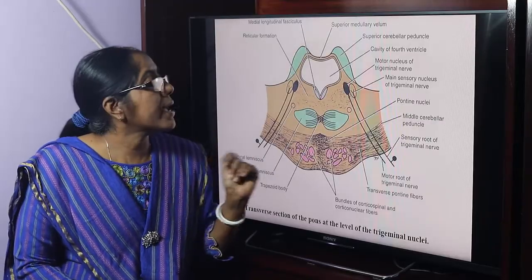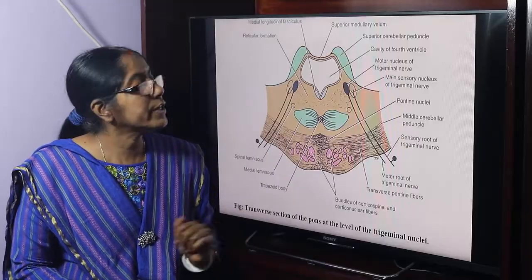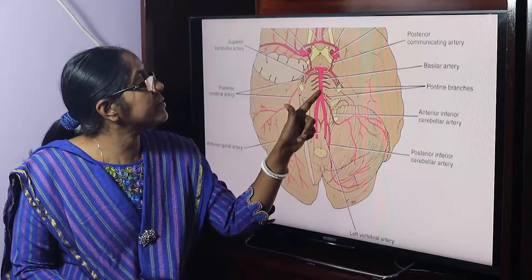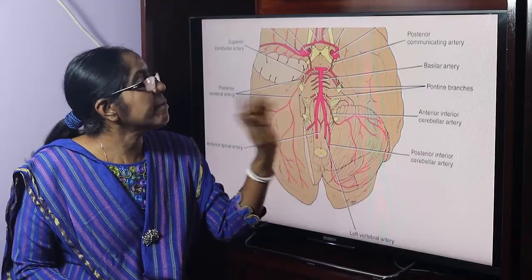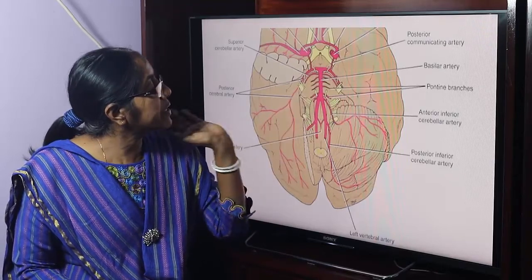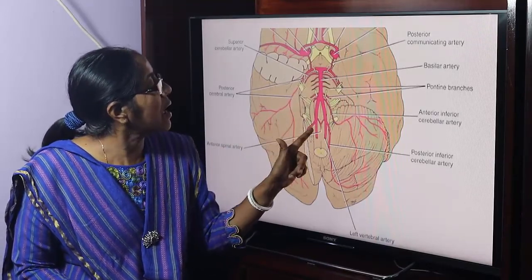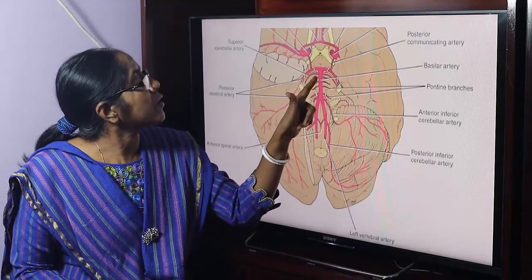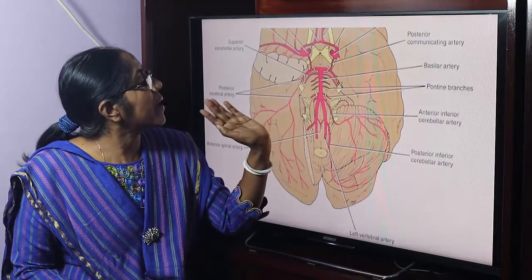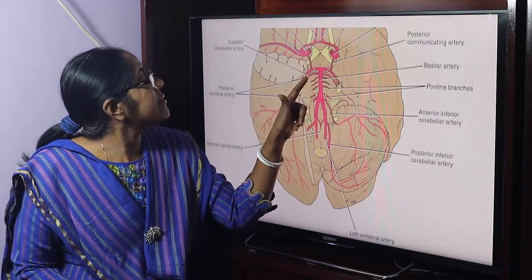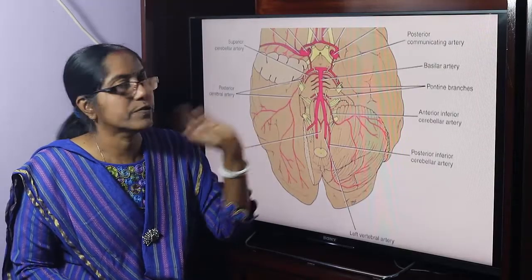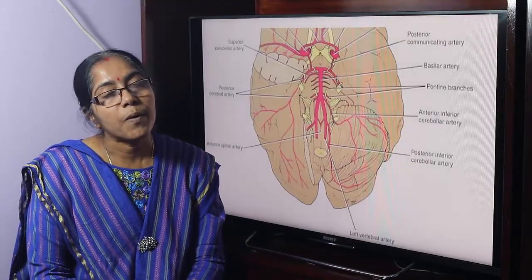Regarding the blood supply of the pons: the basilar artery supplies the main territory. The medial branches supply via the paramedian groove of the basilar artery.